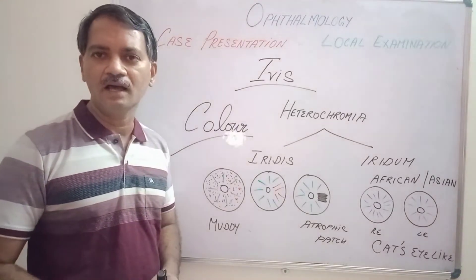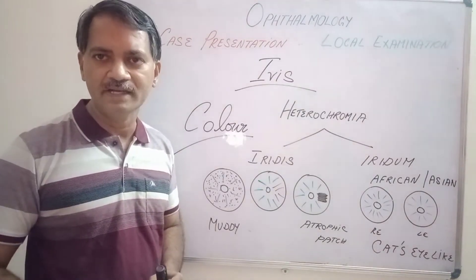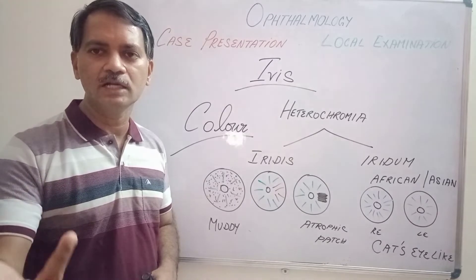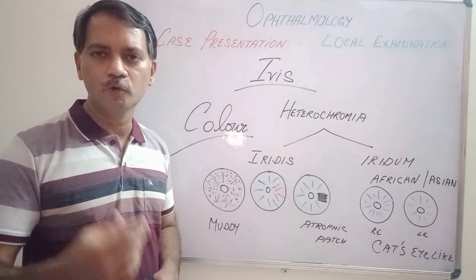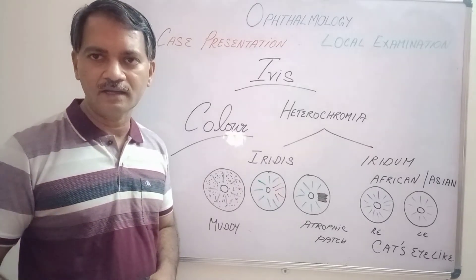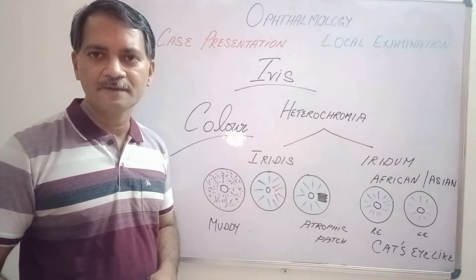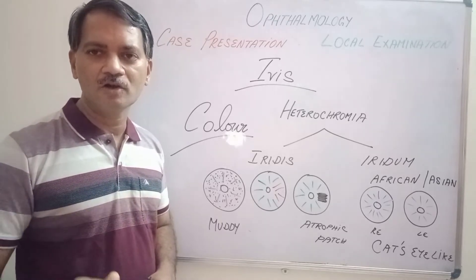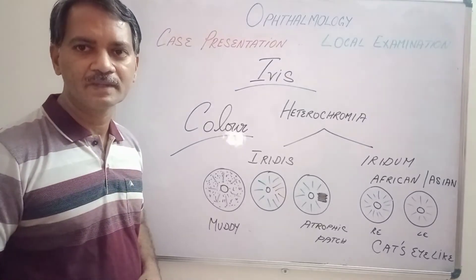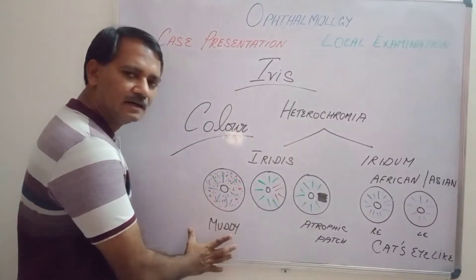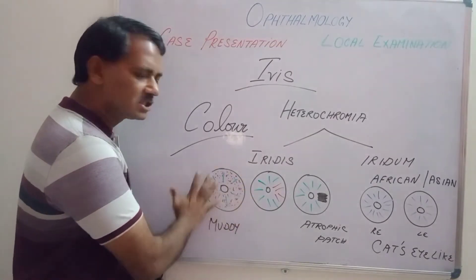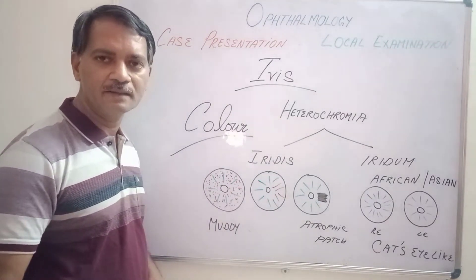Suppose a patient has iridocyclitis or anterior uveitis, where there will be outpouring of cells and proteins into the aqueous humor. These cells and proteins will be floating in the aqueous humor, deposited on the back of the cornea forming keratic precipitates, or deposited on the surface of the iris itself, obscuring its color as well as the pattern. You can see a muddy colored iris in iridocyclitis, with deposits of cells and proteins making it muddy appearing.